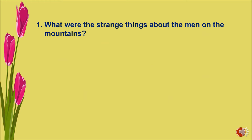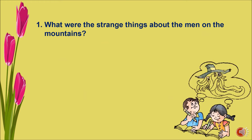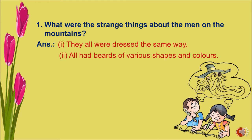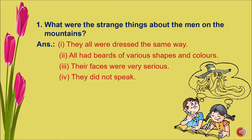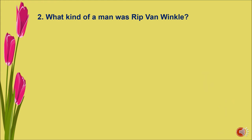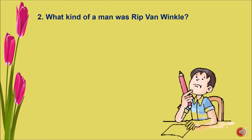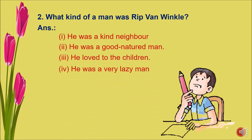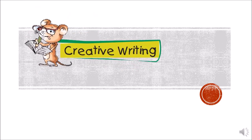Next, Let's Write, question one: what were the strange things about the men on the mountains? Answer: they were all dressed the same way, all had beards of various shapes and colors, their faces were very serious, and they did not speak. Question two: what kind of a man was Rip Van Winkle? He was a kind neighbor, a good-natured man who loved children, but he was also very lazy.